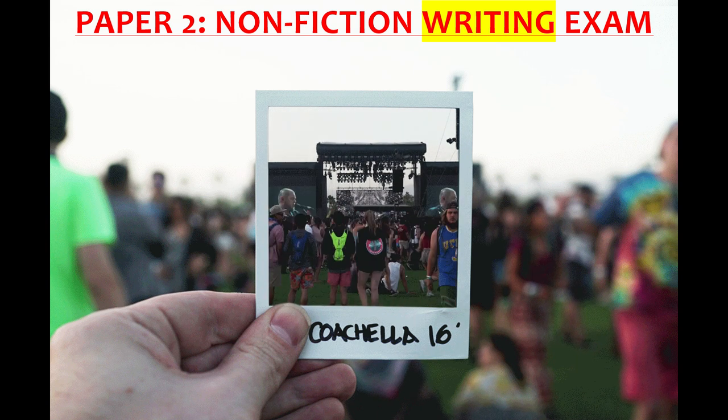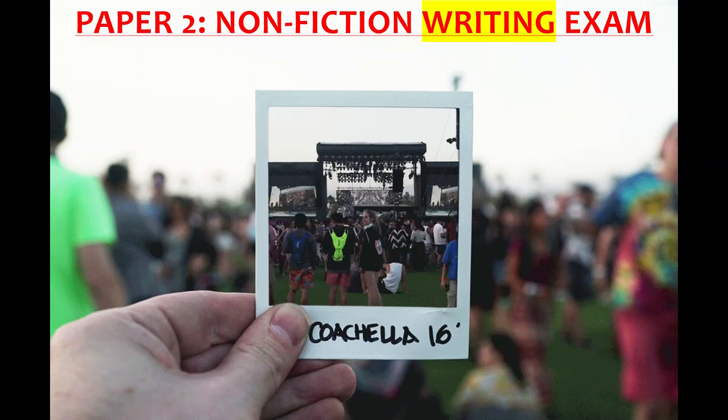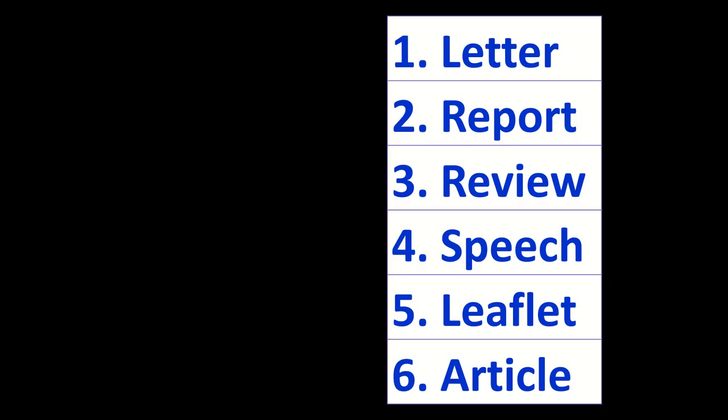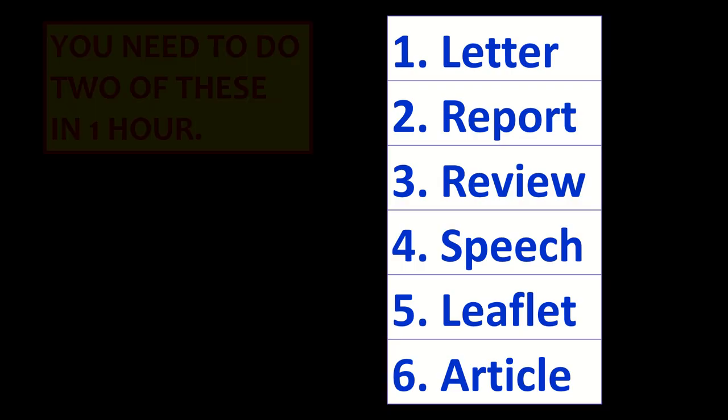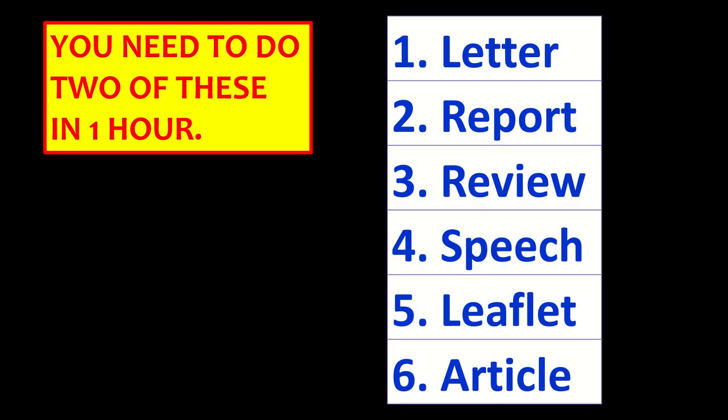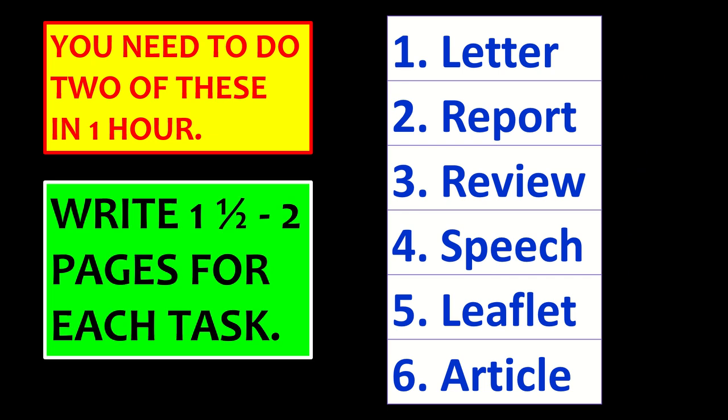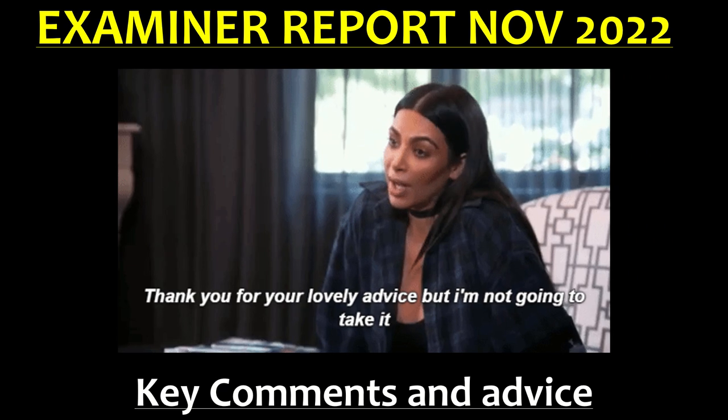We're looking at the Paper 2 nonfiction writing exam. These are the six text types you can get. You need to do two of those in an hour, and you're looking at 300 to 400 words, or about a page and a half to two pages of average-size handwriting.